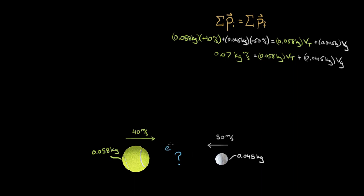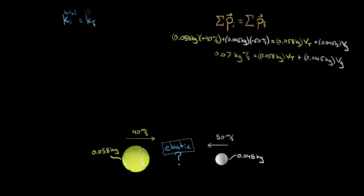It's much more likely that we're told this collision is elastic. Elastic means the total kinetic energy is constant — conserved — and no kinetic energy is lost to thermal energy or sound. Just being told the collision is elastic is enough to solve for the final velocities, because it implies kinetic energy is conserved, giving us a second equation.